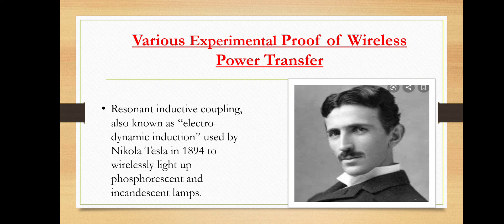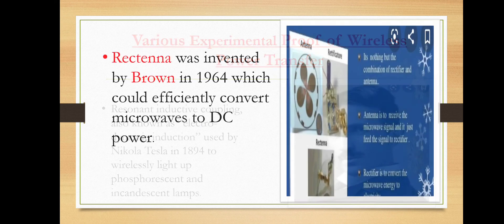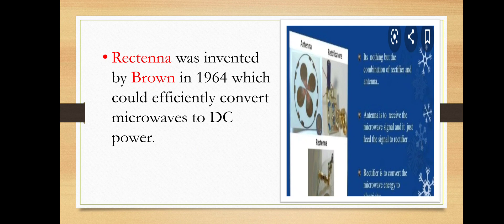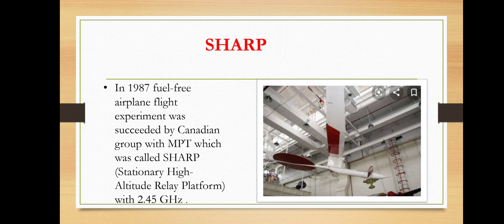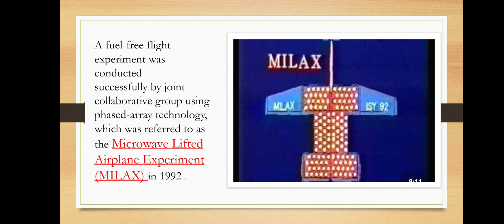First, resonant inductive coupling, also known as electrodynamic induction, was used by Nikola Tesla in 1894 to wirelessly light up phosphorescent and incandescent lamps. The rectenna was invented by Brown in 1964, which could efficiently convert microwaves to DC power. The first wireless powered aircraft was demonstrated in 1964 — a model helicopter powered by microwaves beamed from the ground. In 1987, a fuel-free airplane flight experiment was succeeded by a Canadian group with SHARP (Stationary High-Altitude Relay Platform). A fuel-free flight experiment was also conducted successfully using phased-array technology, referred to as the Microwave-Lifted Airplane Experiment in 1992.